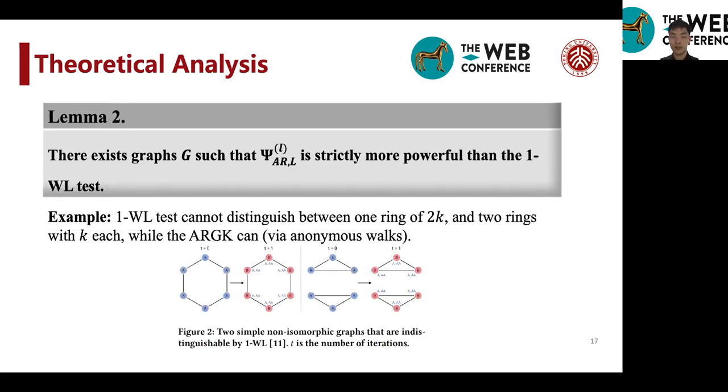And also, we show that there exists graphs G such that the anonymous random graph kernel proposed in our work is strictly more powerful than the 1-WL test.